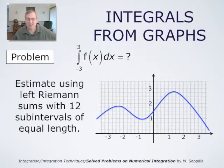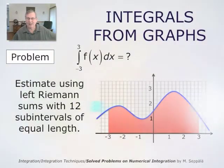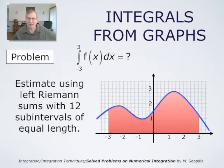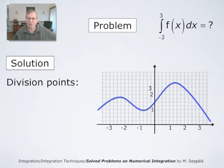Our task is to estimate this integral with a Riemann sum, with left Riemann sum, with 12 subintervals. So we have to estimate the area of the red domain shown here in this picture, and we are advised to use 12 subintervals.